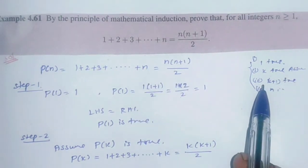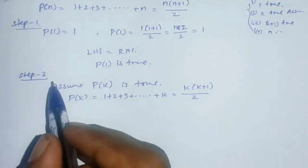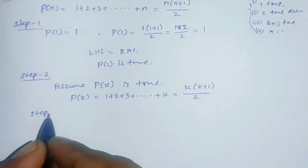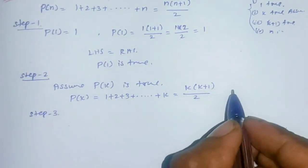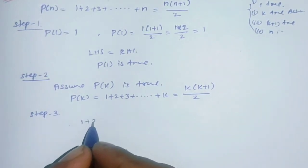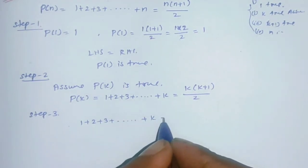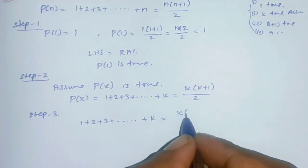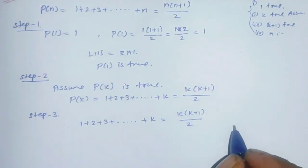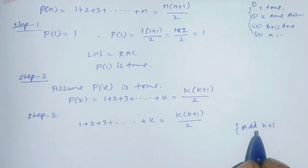Step 3: Prove P(k+1) is true. Starting from the assumed equation 1+2+3+...+k = k(k+1)/2, we add the next term (k+1) to both sides.